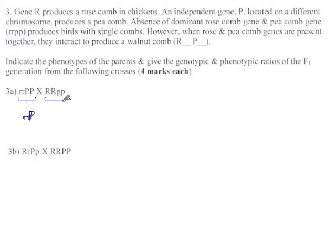This parent, the same is true, except it can only pass on big R, little p. And so here is our itty bitty Punnett square with the contributions of the two parents on these two sides. And when we combine these, we get big R, little r, big P, little p. This chicken has the rose trait and the P trait, and when you have both of those at once, they produce a walnut comb.